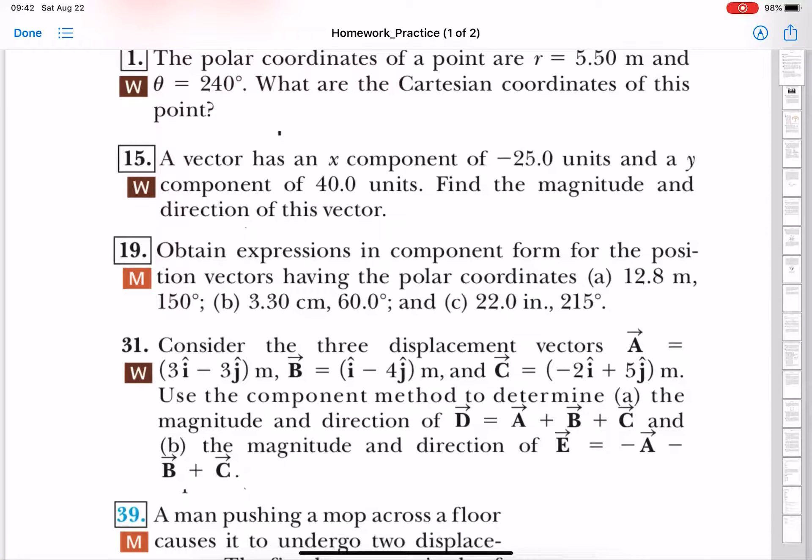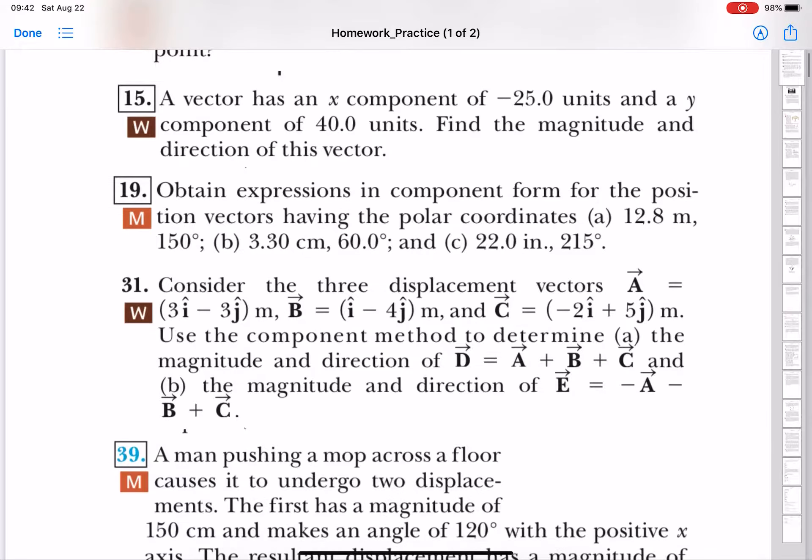Okay, now let's look at problem number 31. Consider three displacement vectors: vector A which is equal to 3i minus 3j, vector B, and vector C. Use the component method to determine the magnitude and direction.